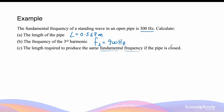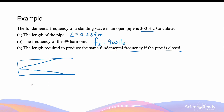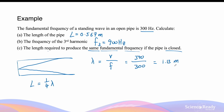Lastly, what length is required to produce the same fundamental frequency of 300 Hz if the pipe is now closed? Drawing a closed pipe, for the fundamental frequency the node occurs at the closed end and the antinode at the open end, and the pipe length equals a quarter of the wavelength. The wavelength is again λ = 340/300 = 1.13 m, so the length of the closed pipe = (1/4) × 1.13 = 0.283 m. This concludes the video on standing waves in pipes.